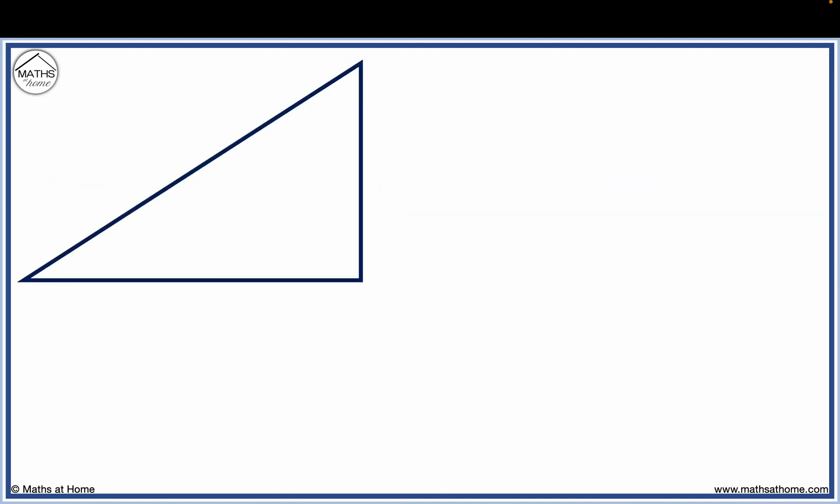Here is a right-angled triangle. We must first label its three sides. Here is the right angle, and here is theta, which represents the angle we wish to calculate.